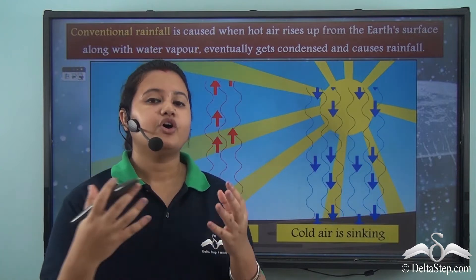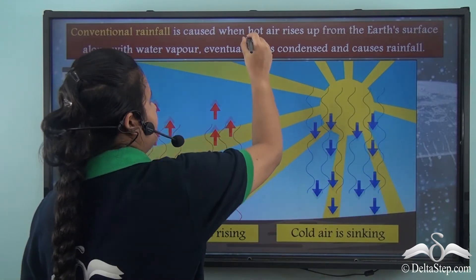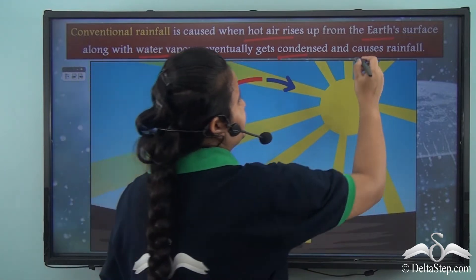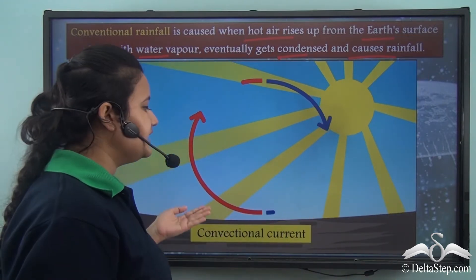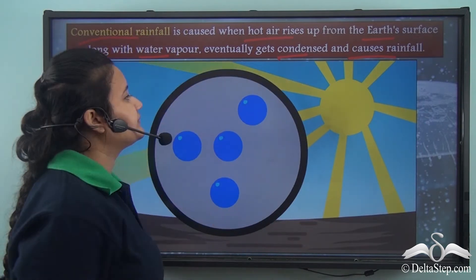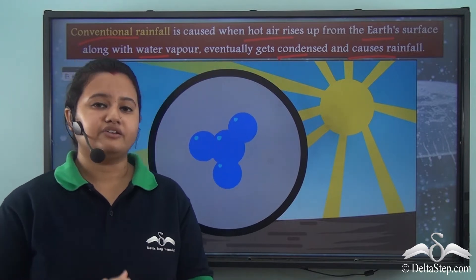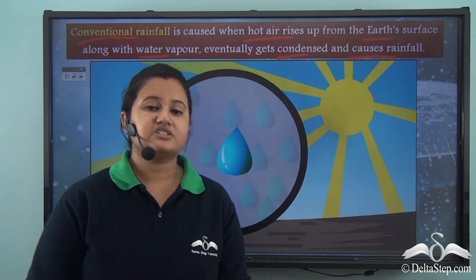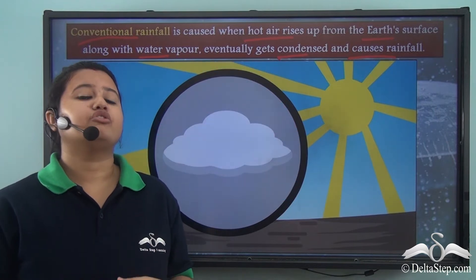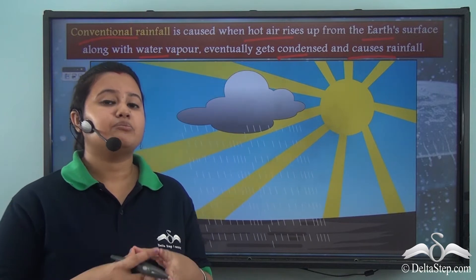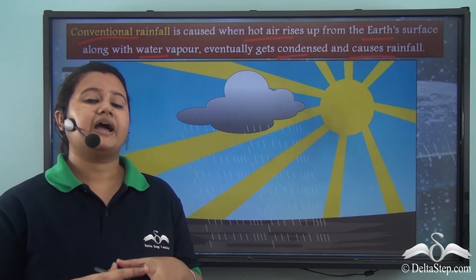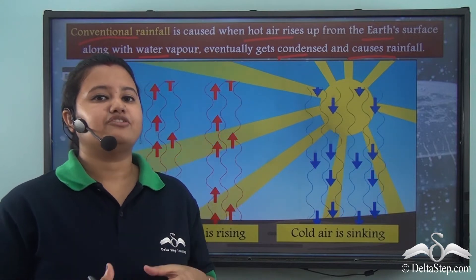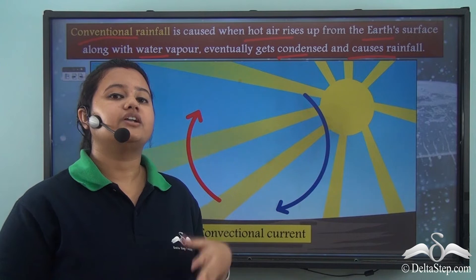This type of rainfall, induced by convection currents, is known as convectional rainfall, also called the 4 o'clock shower. It mostly occurs in equatorial regions because equatorial regions receive the maximum amount of solar heat during the day. By evening, the process of condensation ends and precipitation begins, so every day around 4 o'clock the equatorial regions receive convectional rainfall.